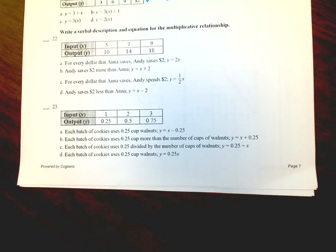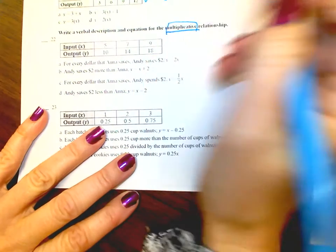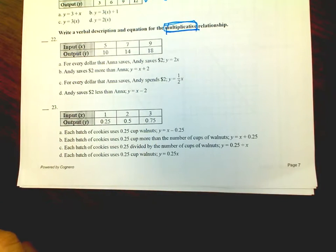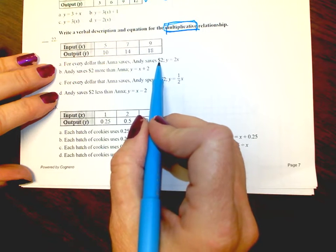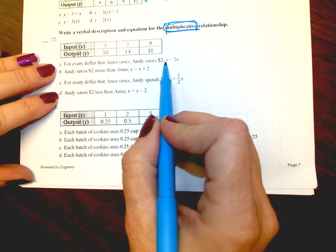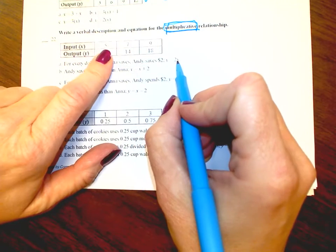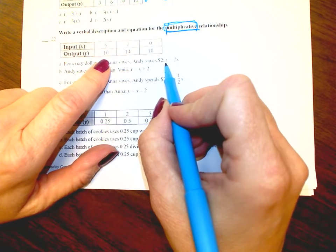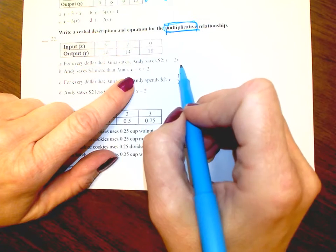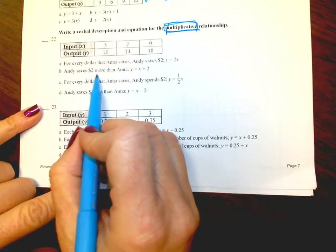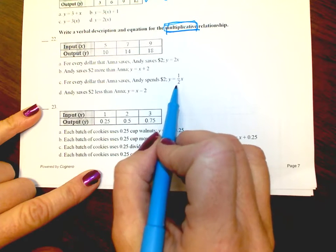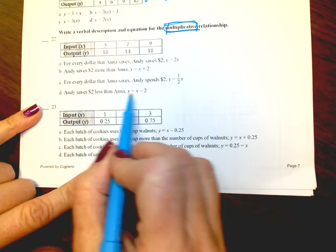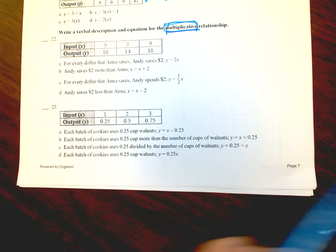Number 22: Write a verbal description and equation for the multiplicative relationship. For every dollar Anna saves, Andy saves 2 — so y equals 2x. Check: 2 times 5 gives 10. Answer B says Andy saves $2 more, so y equals x plus 2. C says for every dollar Anna saves, Andy spends 2, so y equals one-half x. D says Andy saves 2 less, so y equals x minus 2. Plug in values to find which one works.